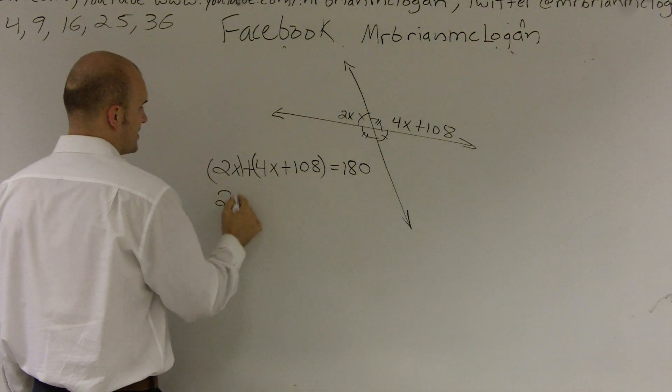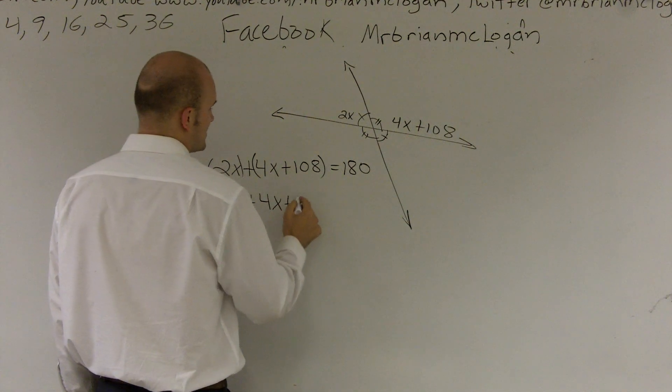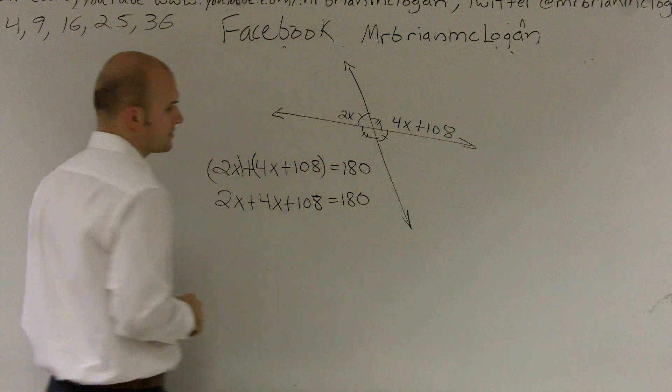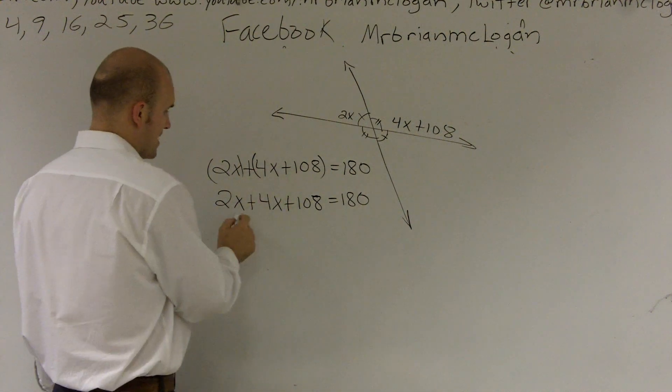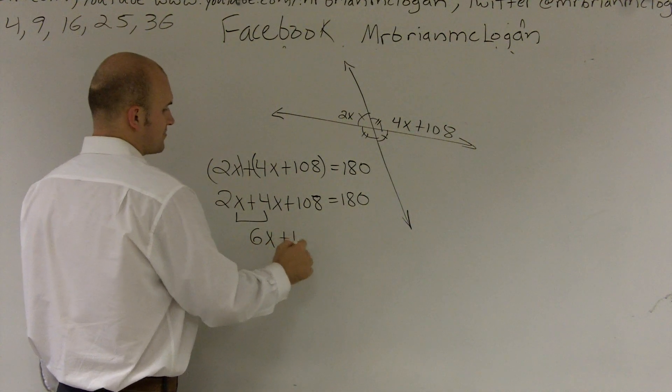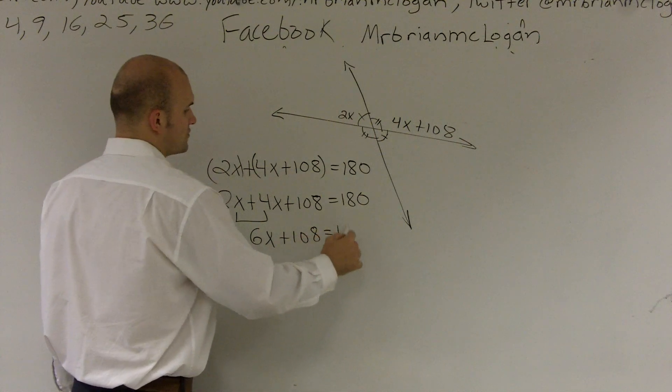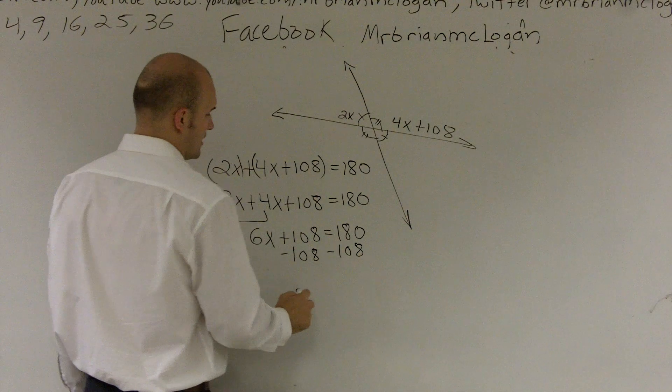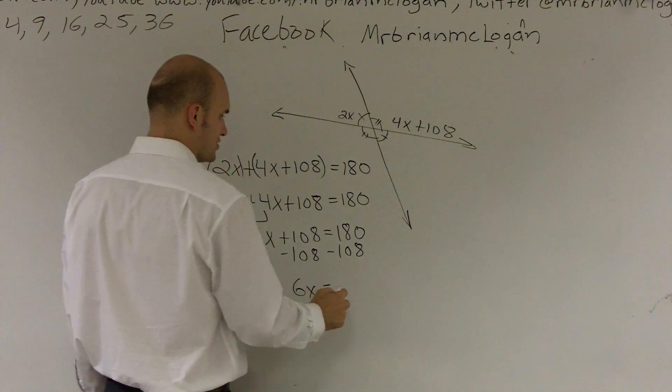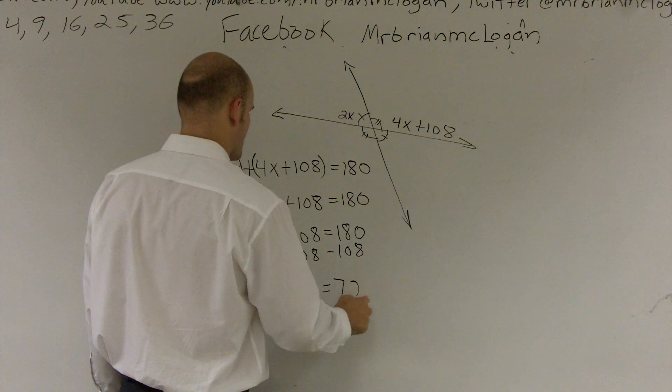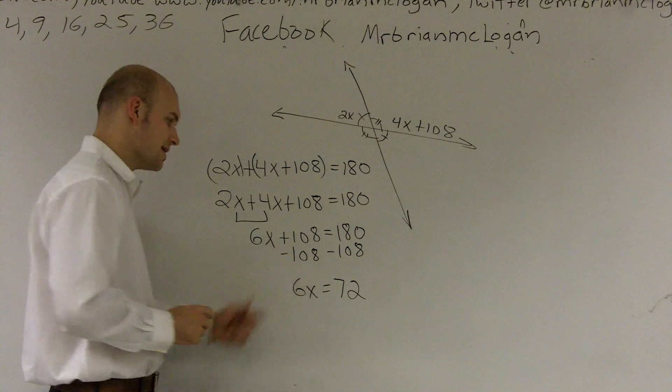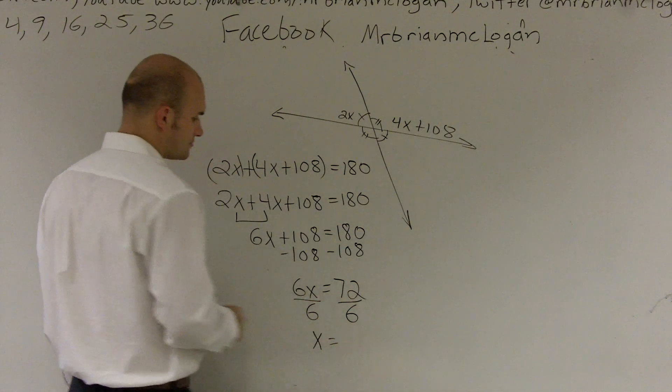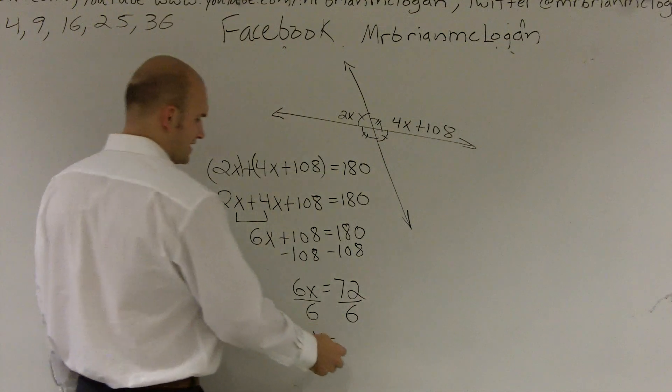So I can write them without the parentheses. 2x plus 4x plus 108 equals 180. Now I can combine my like terms. 6x plus 108 equals 180. Subtract the 108. I get 6x is equal to 72. Then I divide by 6, and I get x is going to equal 12.